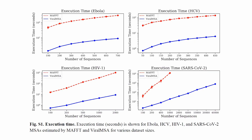I performed a benchmarking experiment in which I compared Viral MSA against the current state-of-the-art multiple sequence alignment tool, MAFFT, across different viral data sets at different data set sizes. On the horizontal axis we have number of sequences, and on the vertical axis we have execution time in seconds. Consistently, Viral MSA scales better than MAFFT and is generally orders of magnitude faster.